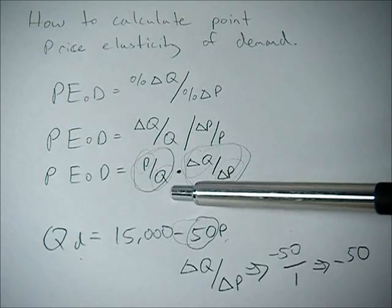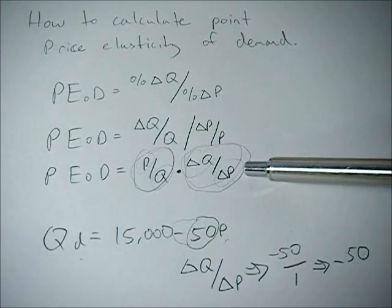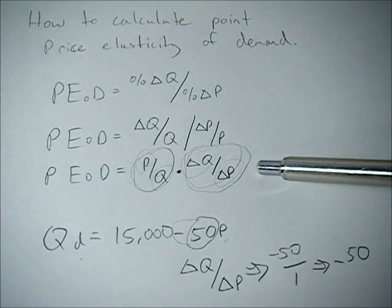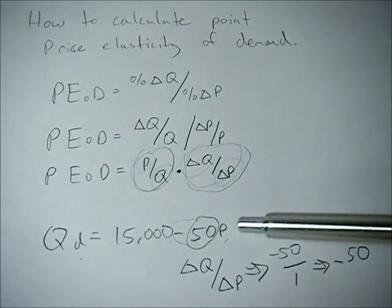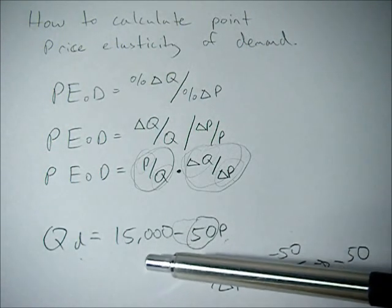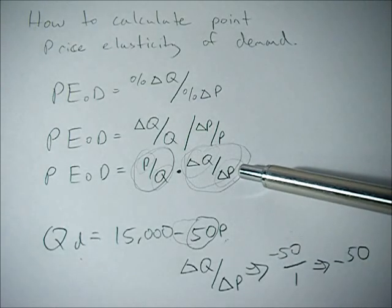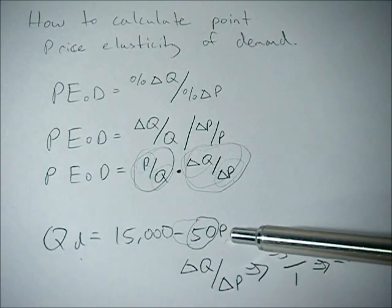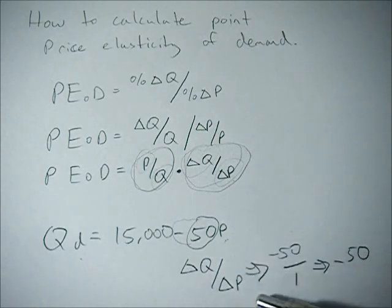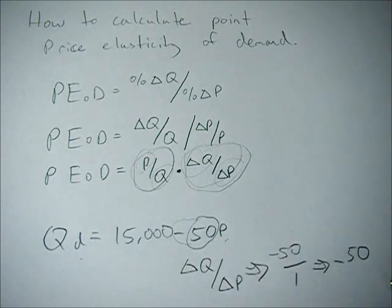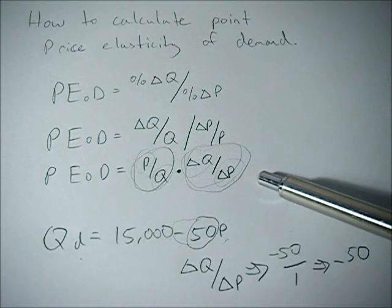We can rearrange this equation to get P over Q times change in Q over change in P. The trick is how do we get this change in Q over change in P. Using an example demand function — 15,000 minus 50P — when P changes by one, Q changes by negative 50. So our change in Q over change in P is negative 50 over 1, which equals negative 50.